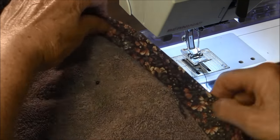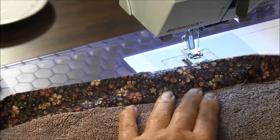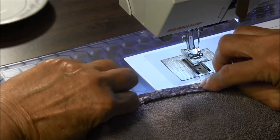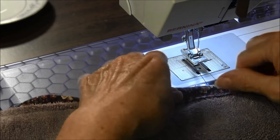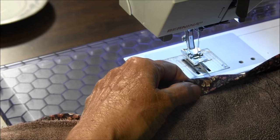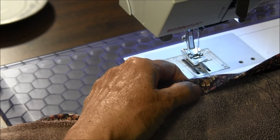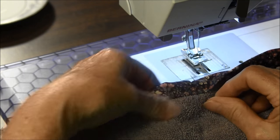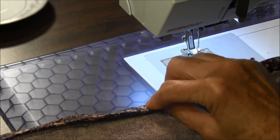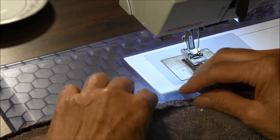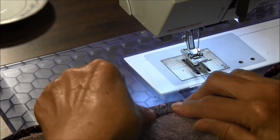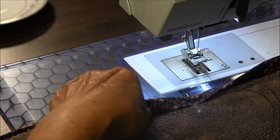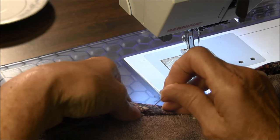Your next step will be to fold the binding over to the back and pin it all along there. You'll cover up your little seam. Then there are two methods you can use to finish it.